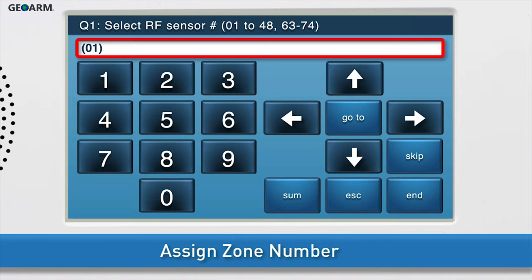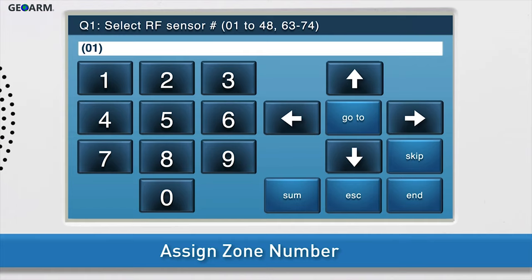The white field is called the answer box. 01 will display in the answer box by default, which means we have selected zone number 1. If you would like to change the zone number, press the right arrow to change the zone number, or type the desired number in using the number keys on screen.